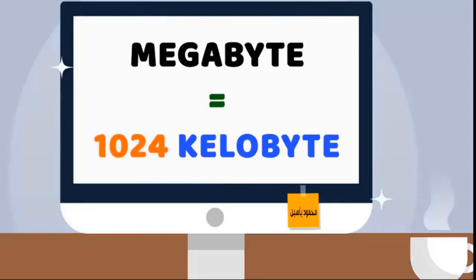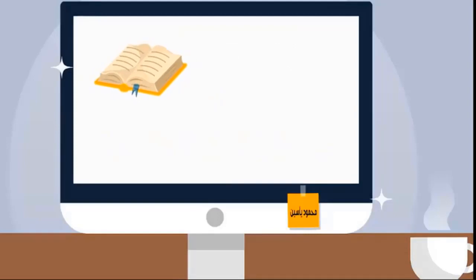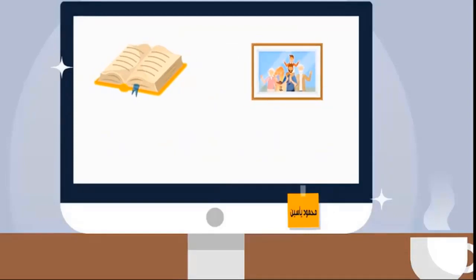In other words, 1 megabyte is equal to 1,024 kilobytes. It is enough space to store a book, a picture, or a minute of audio.